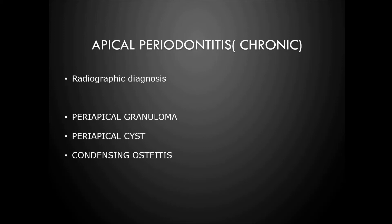When virulence of bacteria is low and host immunity is more, the condition turns from acute apical periodontitis into chronic apical periodontitis. Chronic apical periodontitis can have three types of lesions: periapical granuloma, periapical cyst, and condensing osteitis. It is purely a radiographic diagnosis — you cannot diagnose chronic apical periodontitis on clinical examination alone.